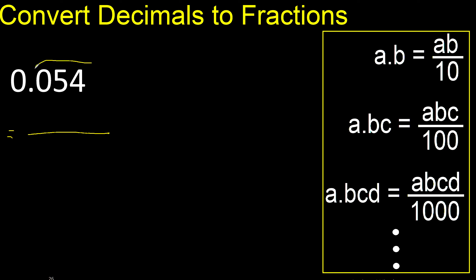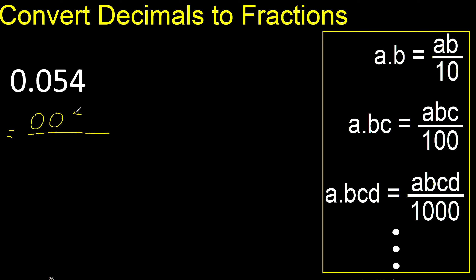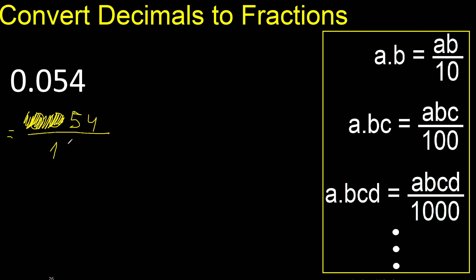First, all the number without point, like this. Eliminate zeros on this side — here always number 1. After the point there are 3 numbers, therefore here 3 zeros.